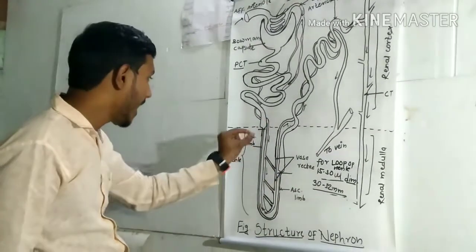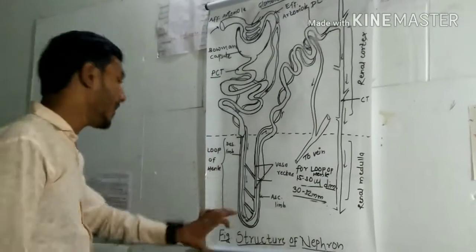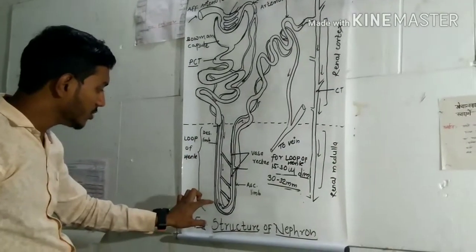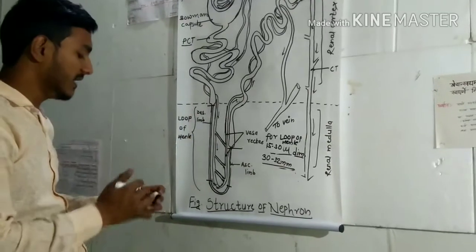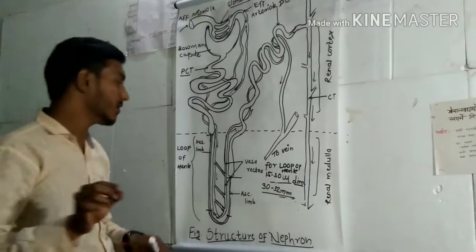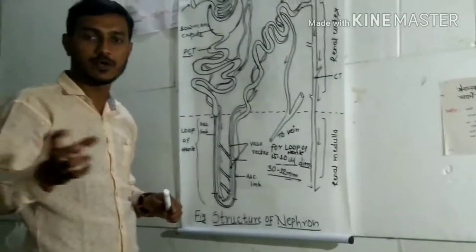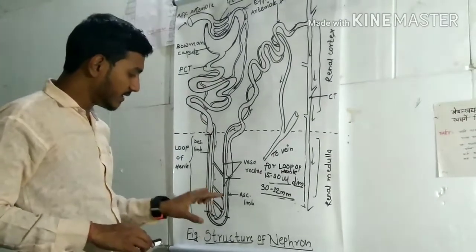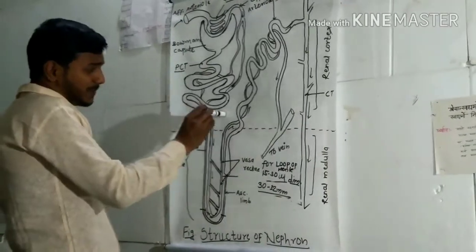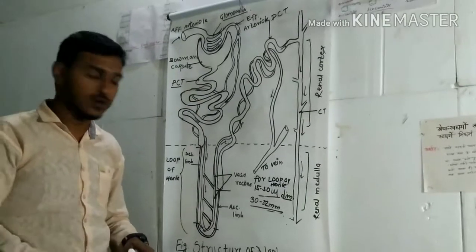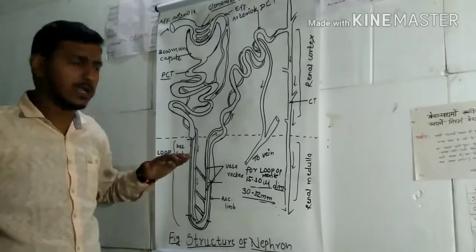The loop of Henle is divided into a descending limb and an ascending limb — a U-shaped structure. The descending limb of the loop of Henle contains squamous epithelial cells and is permeable to water, so water can be absorbed from this region. The ascending limb is not permeable to water and contains cuboidal cells. The main function of the loop of Henle is absorption of water from the urine.